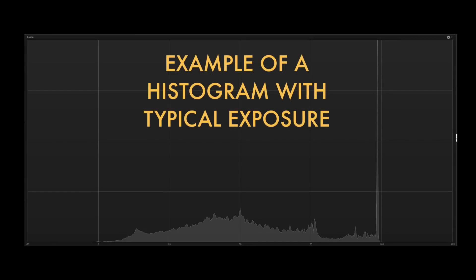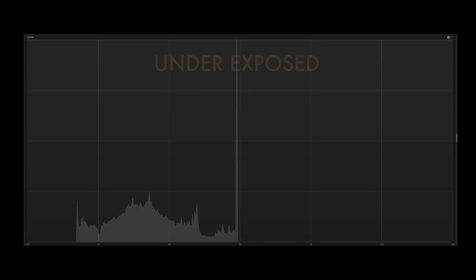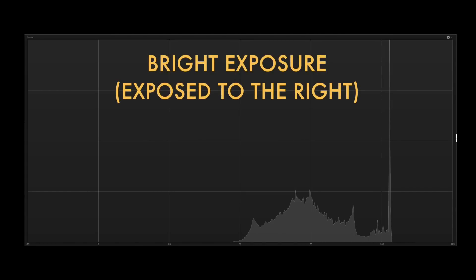I've heard a lot of YouTubers and reviewers say that the solution to the noisy shadows problem is to expose to the right — and what they mean by that is make sure that your exposure is on the right hand side of your histogram. For people who are not familiar with the histogram, it's probably a good idea to look up what they are, but in a nutshell it's a graph — a visual way of showing where your exposure is. On the right hand side you've got very bright, and towards the left you've got very dark.